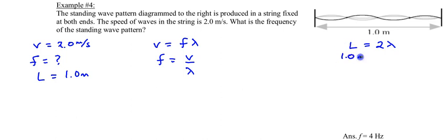So one meter equals two lambda, therefore lambda, the wavelength, is equal to 1 over 2 meters, so half a meter. So there's half a meter of a wavelength for this wave.